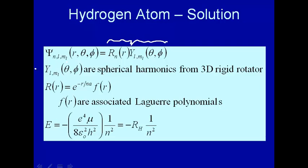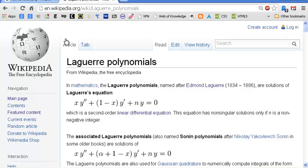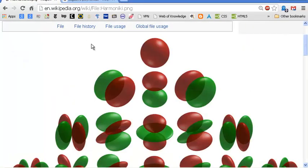It turns out that this angular dependence is the spherical harmonics, the exact same functions we got when we considered the quantum mechanics of a 3D rigid rotator. So that means we already know about these solutions. Let's refresh our memory about those. Here they are.